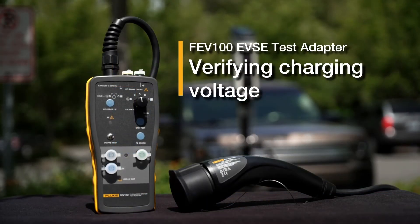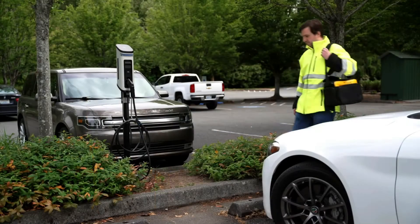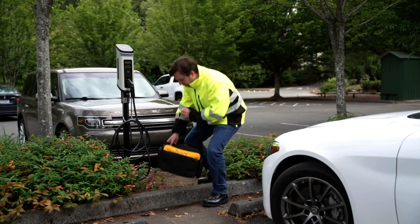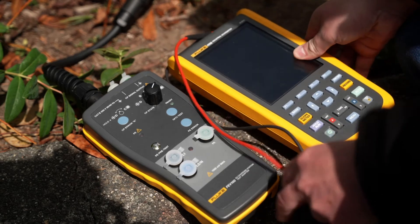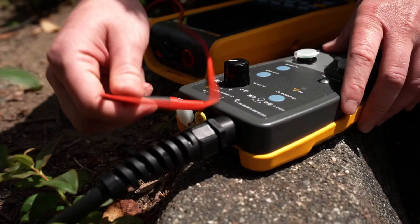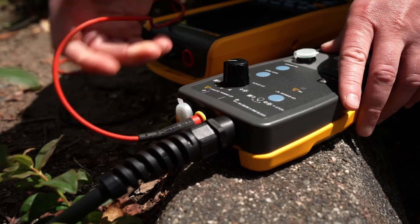Test different charging states of an AC Level 2 charging station with the Fluke FEV100 EVSE test adapter. The adapter simulates control pilot charging states of an electrical vehicle, so you can verify the charging voltage using a digital multimeter or scope meter.